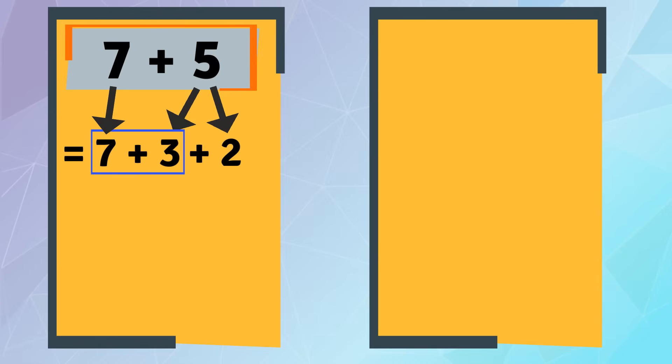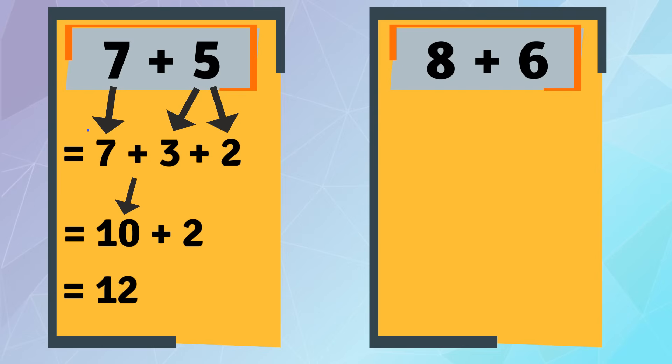So we can rewrite the equation as 10 plus 2. Then we replace the 0 with the remaining value, which is 2. 10 plus 2 equals 12. That means 7 plus 5 equals 12. Next: 8 plus 6.